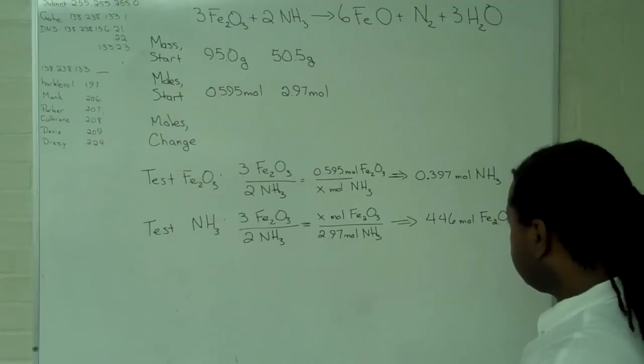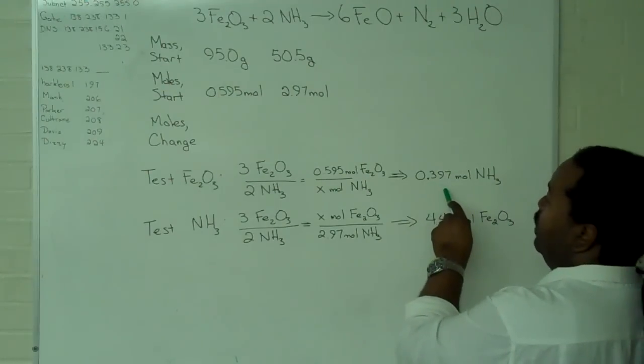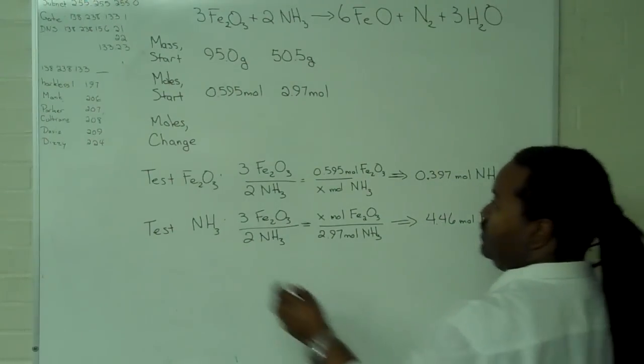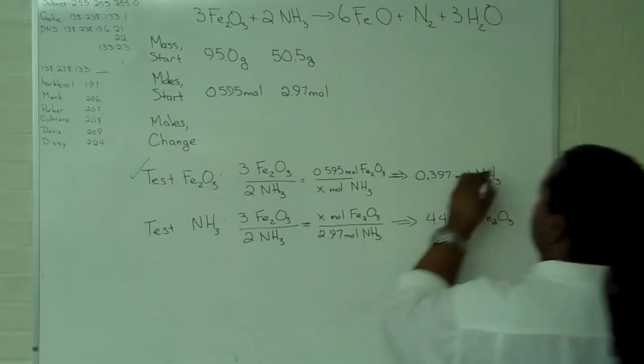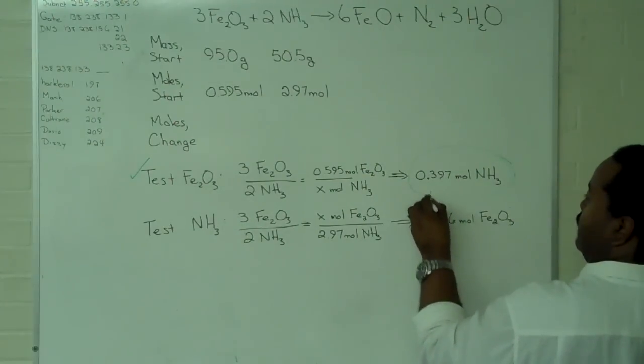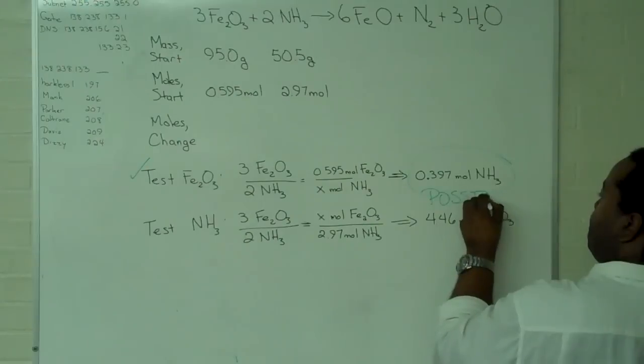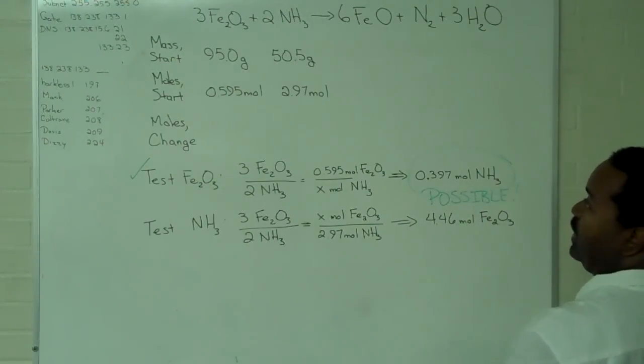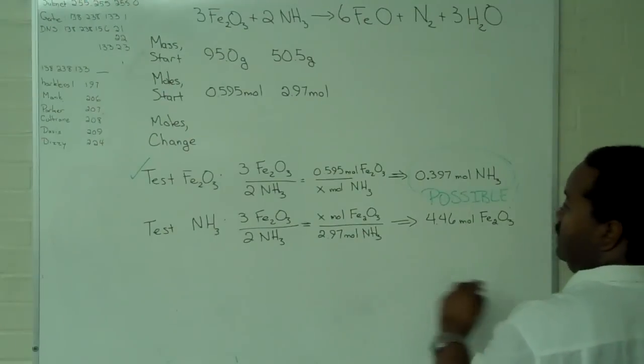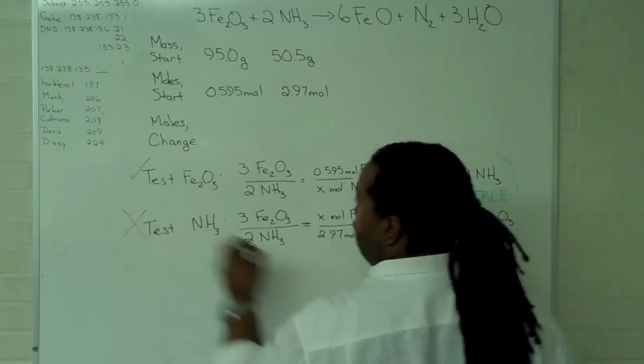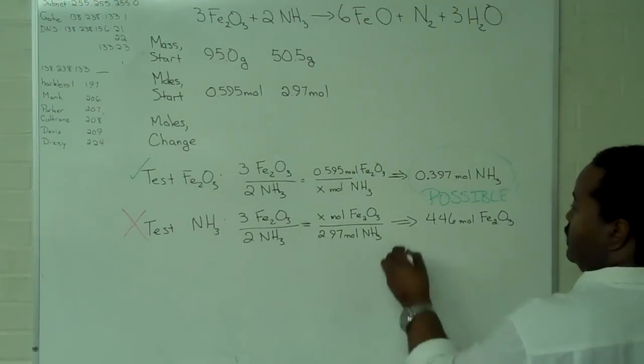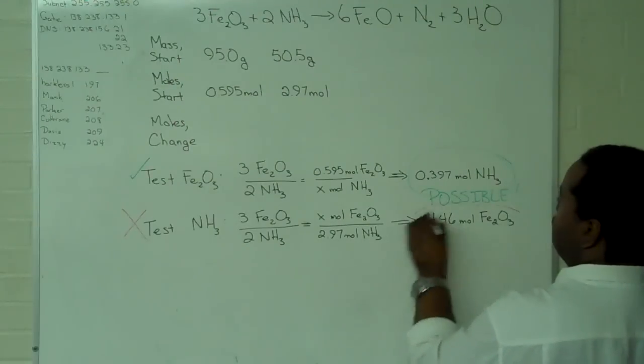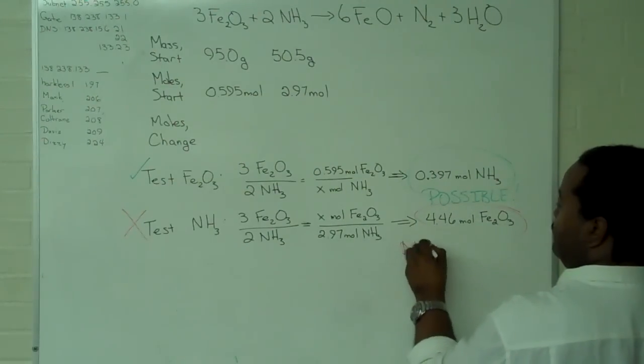We can then compare these values against what we actually have. As it turns out, we have more than enough of the ammonia, so this value works and is possible. We do not have enough of the iron-3 oxide, so this one is not possible.